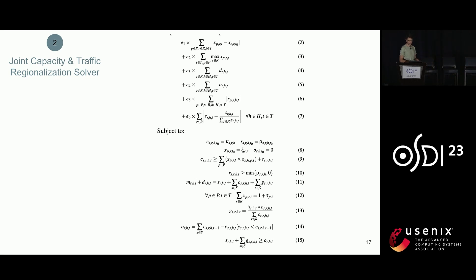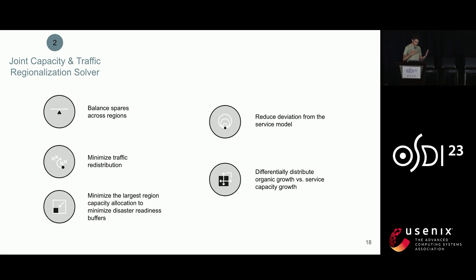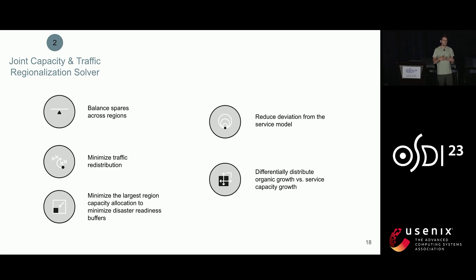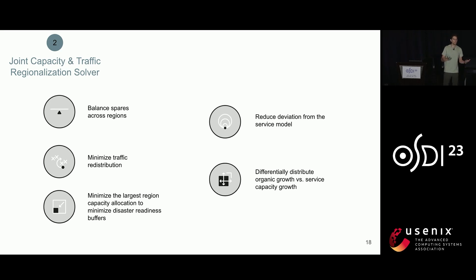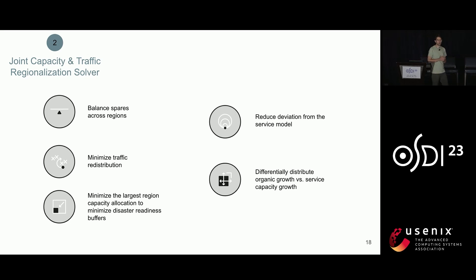We take this model to formulate an optimization problem that jointly places traffic with capacity. On top of this core model we can apply several optimization objectives — for example, balancing spare capacity across regions to respond more quickly to capacity shortages, or rebalancing capacity to minimize our DR buffer needs, which can lead to substantial cost savings.